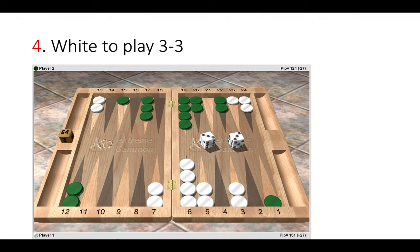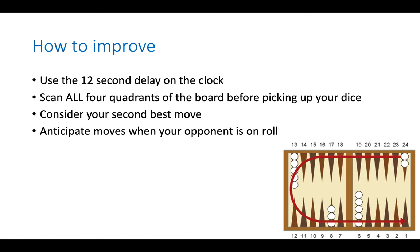So there we are. There's four examples of board blindness over the board. But what can we do to improve and to avoid ourselves making these mistakes? Now firstly use the 12 second delay on the clock. It's there for a reason.